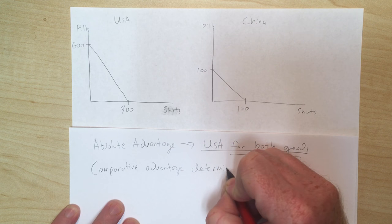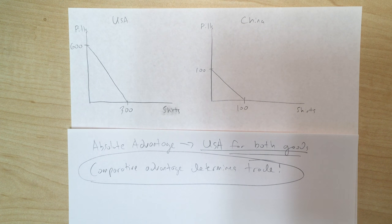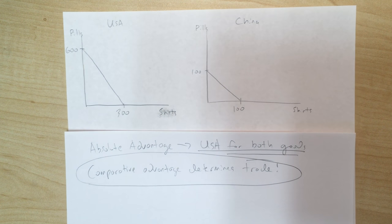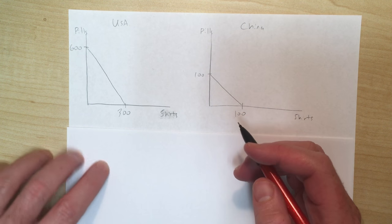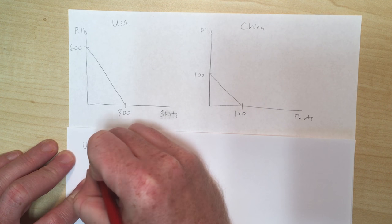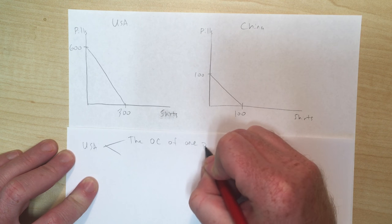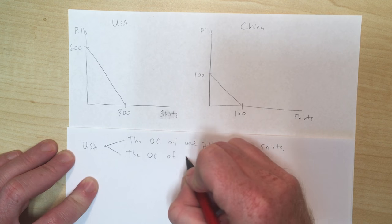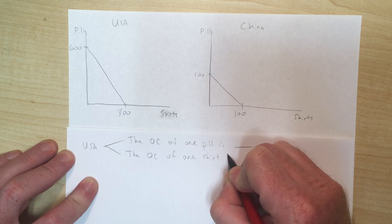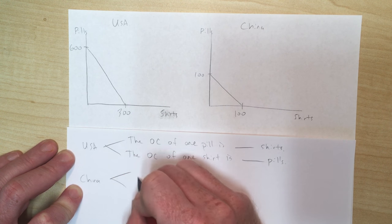Comparative advantage determines trade, not absolute advantage — that's a very important thing to understand. Hopefully this example will prove that. So what we need to do is figure out the comparative advantages, which means completing those opportunity cost sentences just like we did last time.